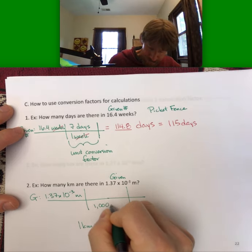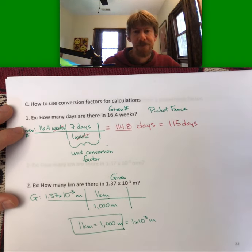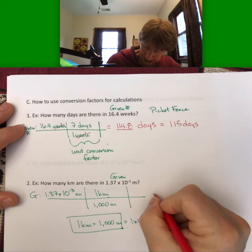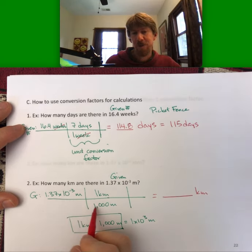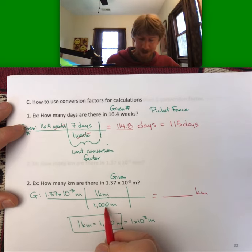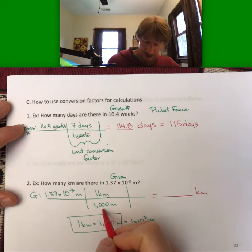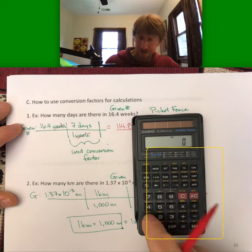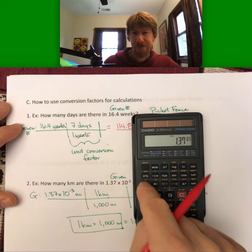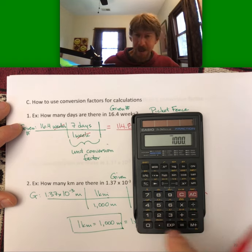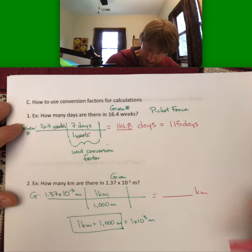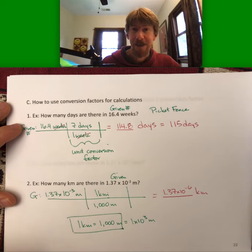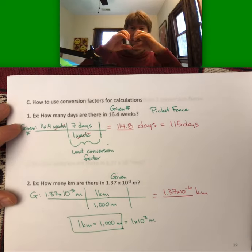Using 1,000 meters equals 1 kilometer, I divide: 1.37×10⁻³ divided by 1,000 gives 1.37×10⁻⁶. The conversion factor has infinite sig figs, so the final answer has three sig figs: 1.37×10⁻⁶ kilometers. Remember — all numbers in this course have units.